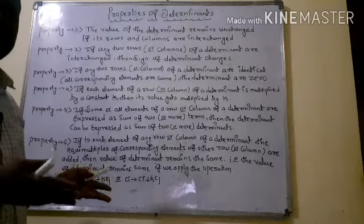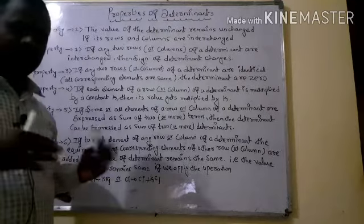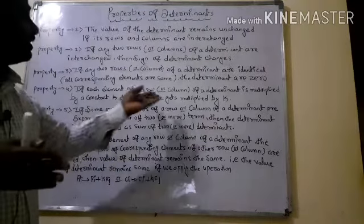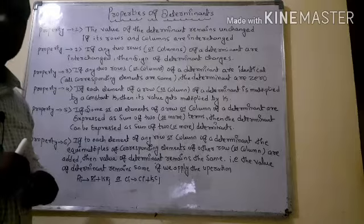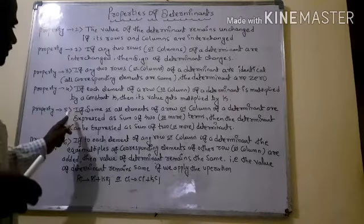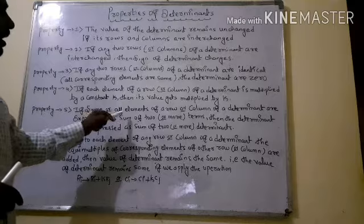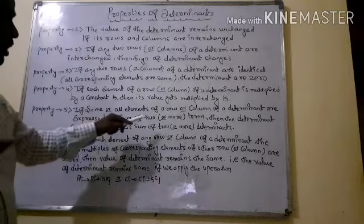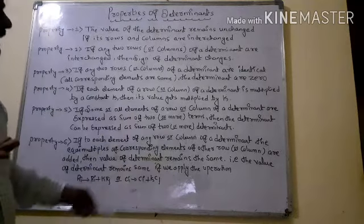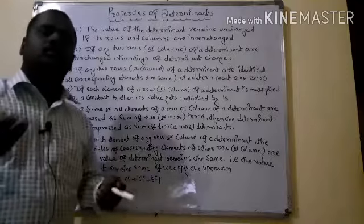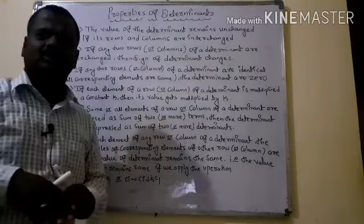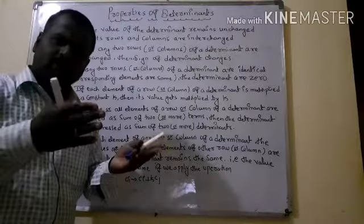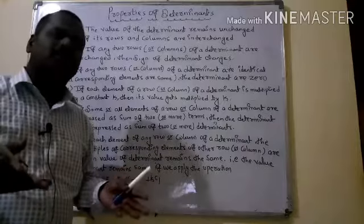Here k means some scalar, real number, or complex number. Whatever you multiply, the determinant's result also gets multiplied by that k value. The fifth property says: if all elements of a row or column of a determinant are expressed as the sum of two or more terms, then the determinant can be expressed as the sum of two or more determinants.